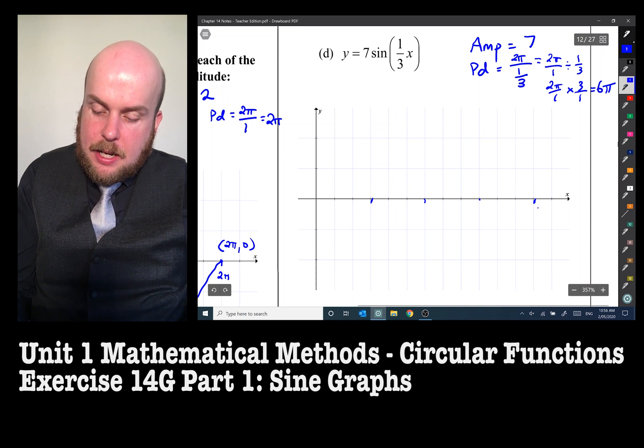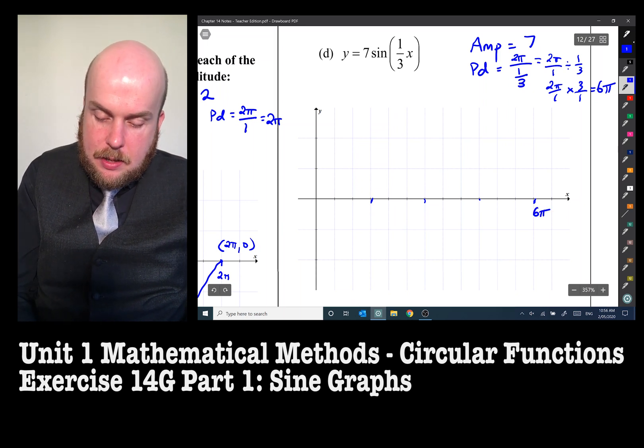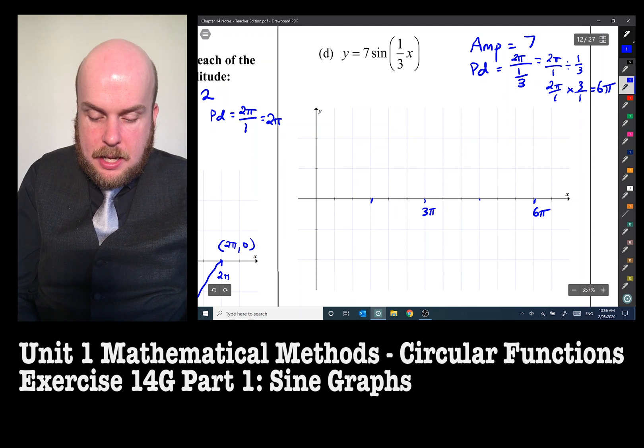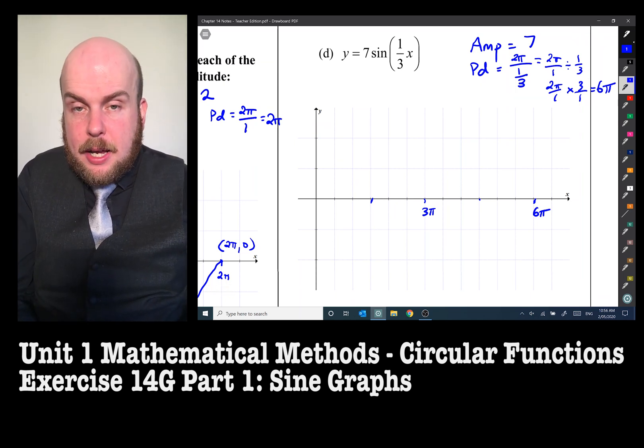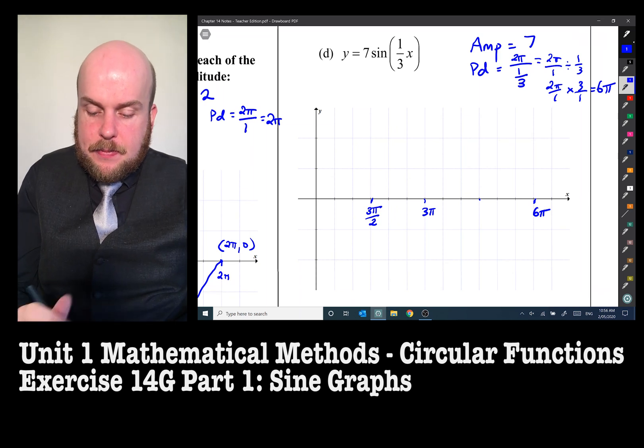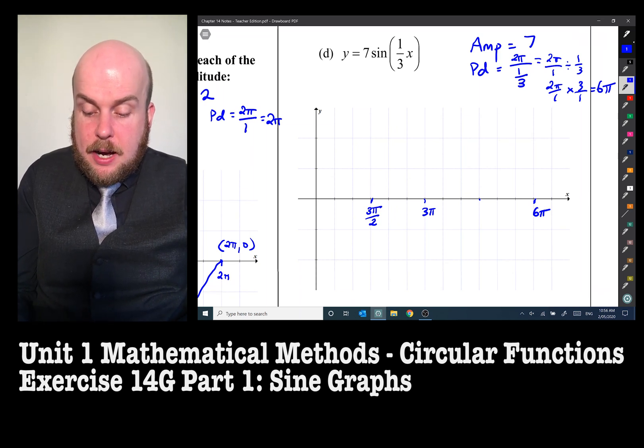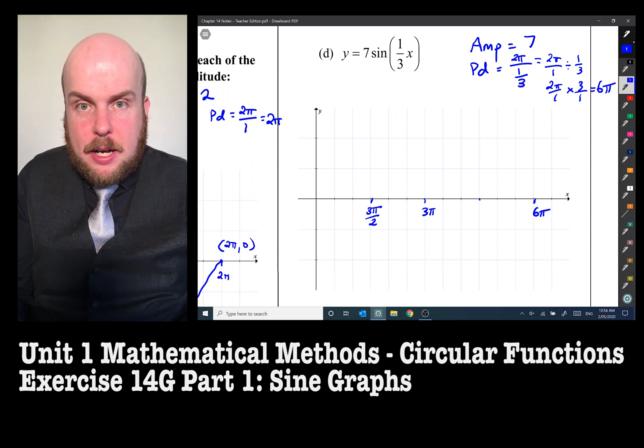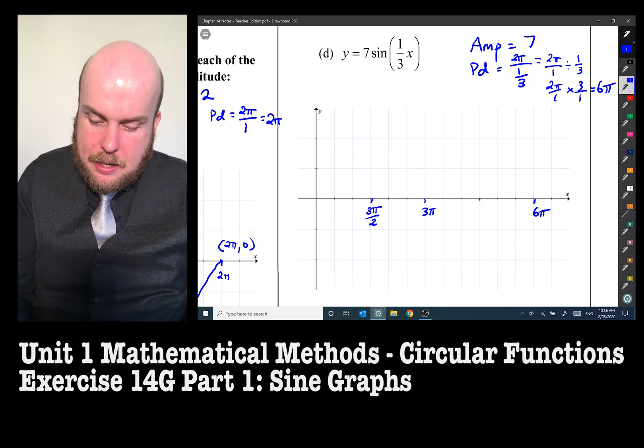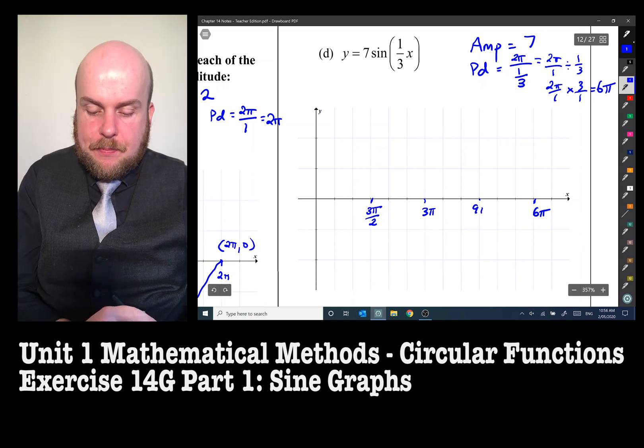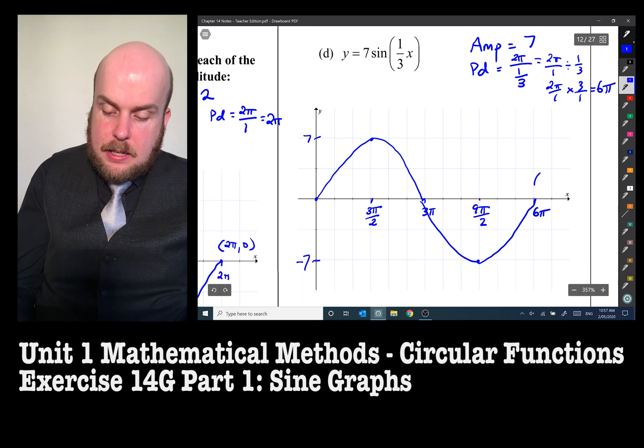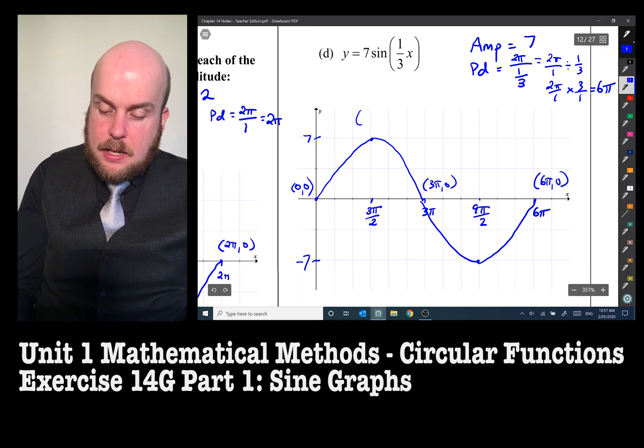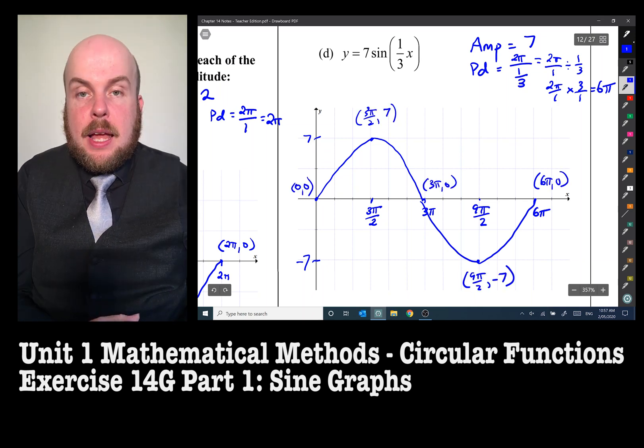So six pi is here. Three pi is there because that's half of six pi. Half of three pi, well, that's 1.5 pi or three pi over two. So therefore this, what's in between three and six pi? Well, that's 4.5 pi. So what's 4.5? Well, that'll be 9 pi over two. The amplitude is seven, negative seven. And then we fill in the coordinates. And there's our graph.